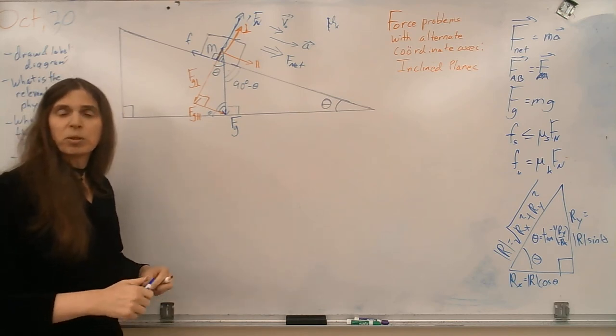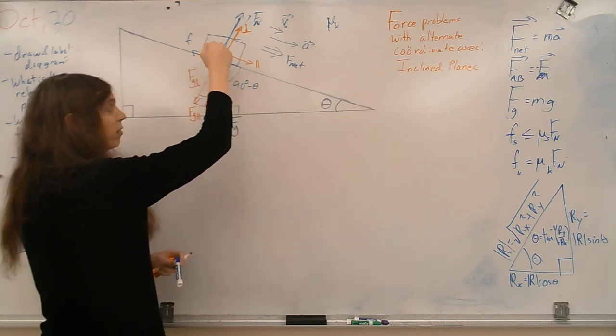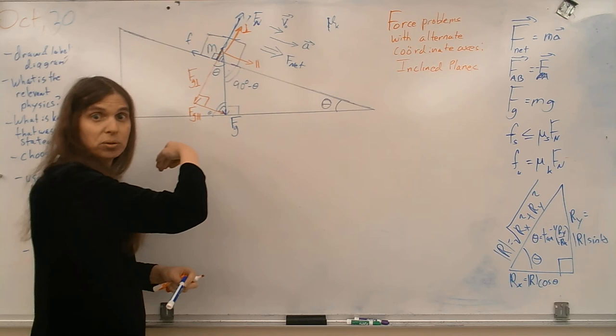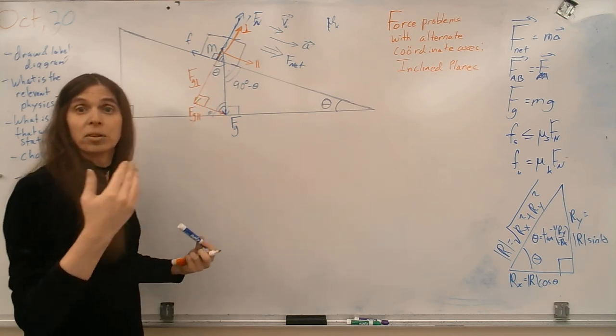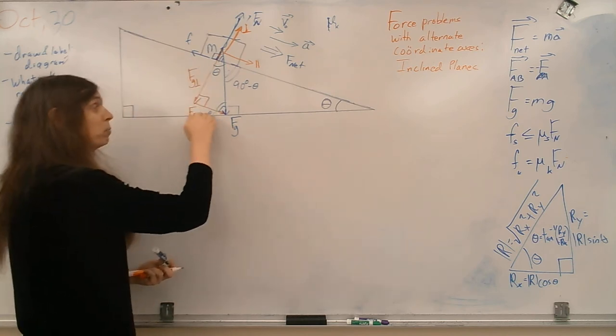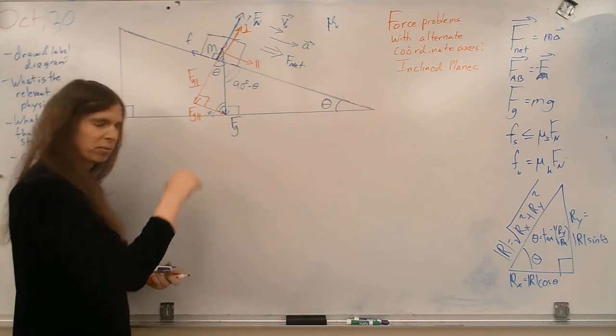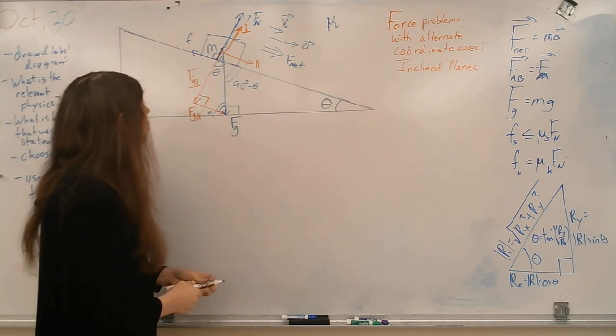So, this angle between our perpendicular component of weight and the total weight vector is the same angle as the angle of our incline. And that should make a little sense because when that angle is smaller, then the part of weight that's into the surface becomes larger. When the angle is steeper, the part that's parallel to the surface becomes larger. So, we can work with that.